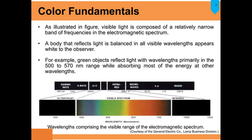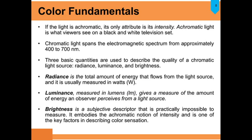Here you see the wavelength spectrum — green color has a wavelength of 500 to 570 nanometers. All other wavelengths are absorbed; only this particular 550 nanometer light is reflected. If the light is achromatic, its only attribute is its intensity. Achromatic light is what viewers see on a black and white television set — no color, that is achroma. Chroma means color.